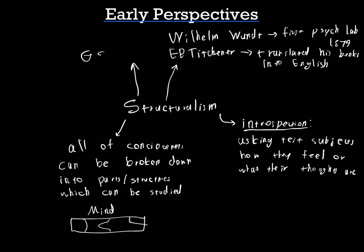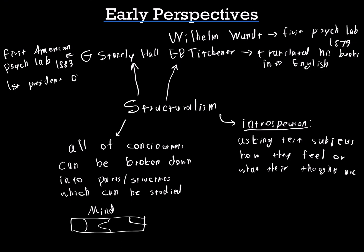Another person you need to know about is G. Stanley Hall. He built the first American psychology laboratory in 1883 at Johns Hopkins University, and he was the first president of the American Psychological Association, or the APA. So that's what you need to know about structuralism and the people involved in it.